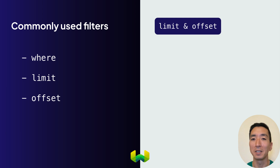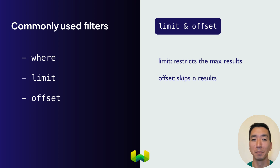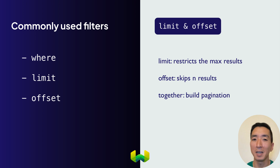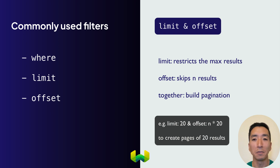Now let's discuss the Limit and Offset filters. You've seen the Limit filter already a number of times. It restricts the maximum number of objects to be retrieved, while the Offset filter is used to skip a certain number of results. These two filters are often used together, allowing you to paginate a long result set into multiple sets of results. For example, to display multiple pages of 20 results per page, you can set Limit to 20 and increase your offset by 20 at a time, starting with 0.